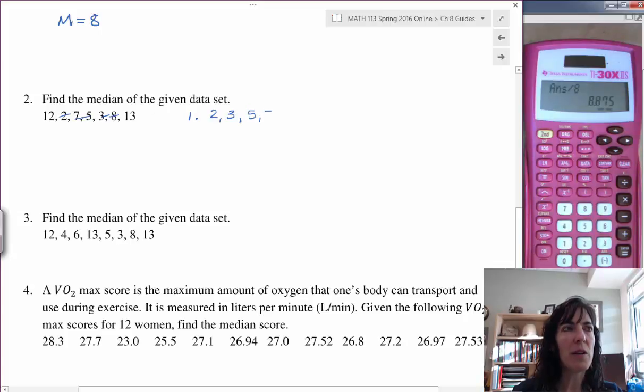Now I do the crossy-crossy deal, so here I'll cross off one from each end, and then another from each end, and then another from each end, and I'm left with a 7 in the middle. So my capital M is going to be 7.